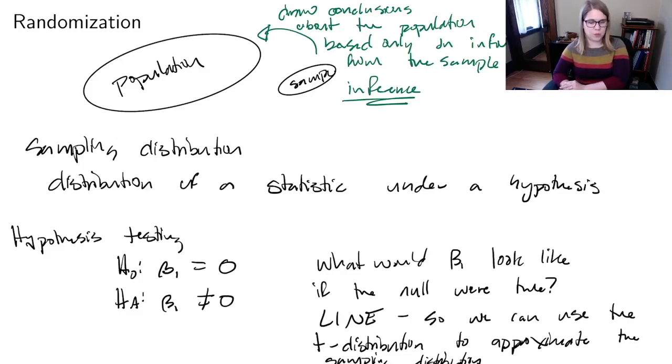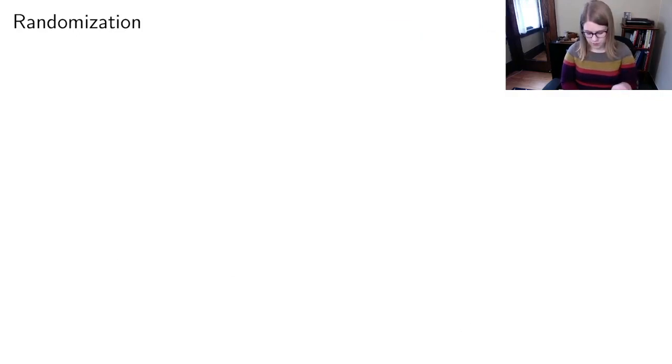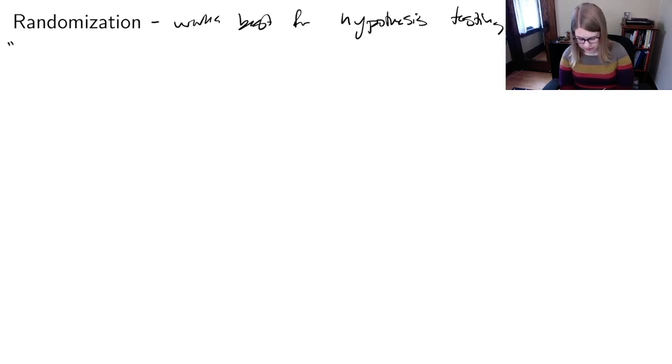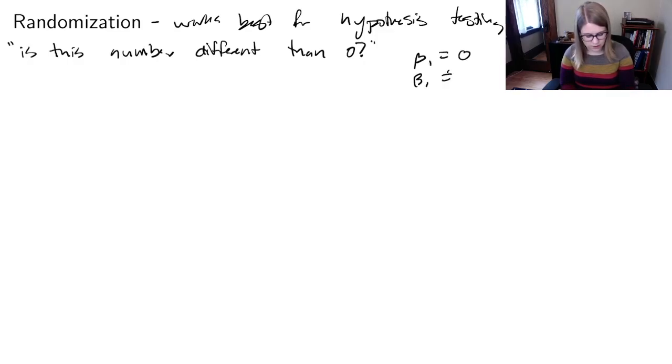If you've taken Stat 220 at St. Thomas you've probably seen a simulation-based curriculum—the Lock Five book has a lot of simulation, so you've probably seen randomization and the bootstrap. I know not all of you have taken that course, so I'm going to give you a conceptual overview of how both techniques work. For randomization, this is a simulation that works best for hypothesis testing. Randomization works best for hypothesis testing and I usually say this goes with the question: is this number different than zero? In other words, is beta 1 equal to zero or is beta 1 not equal to zero?